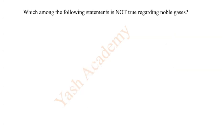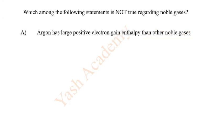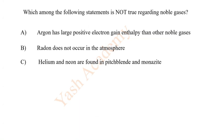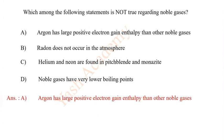Which among the following statements is not true regarding noble gases? A: Argon has large positive electron gain enthalpy than other noble gases. B: Radon does not occur in the atmosphere. C: Helium and Neon are found in pitchblende and monazite. D: Noble gases have very lower boiling points. So here answer is A. This statement is incorrect. Here neon is the correct answer.